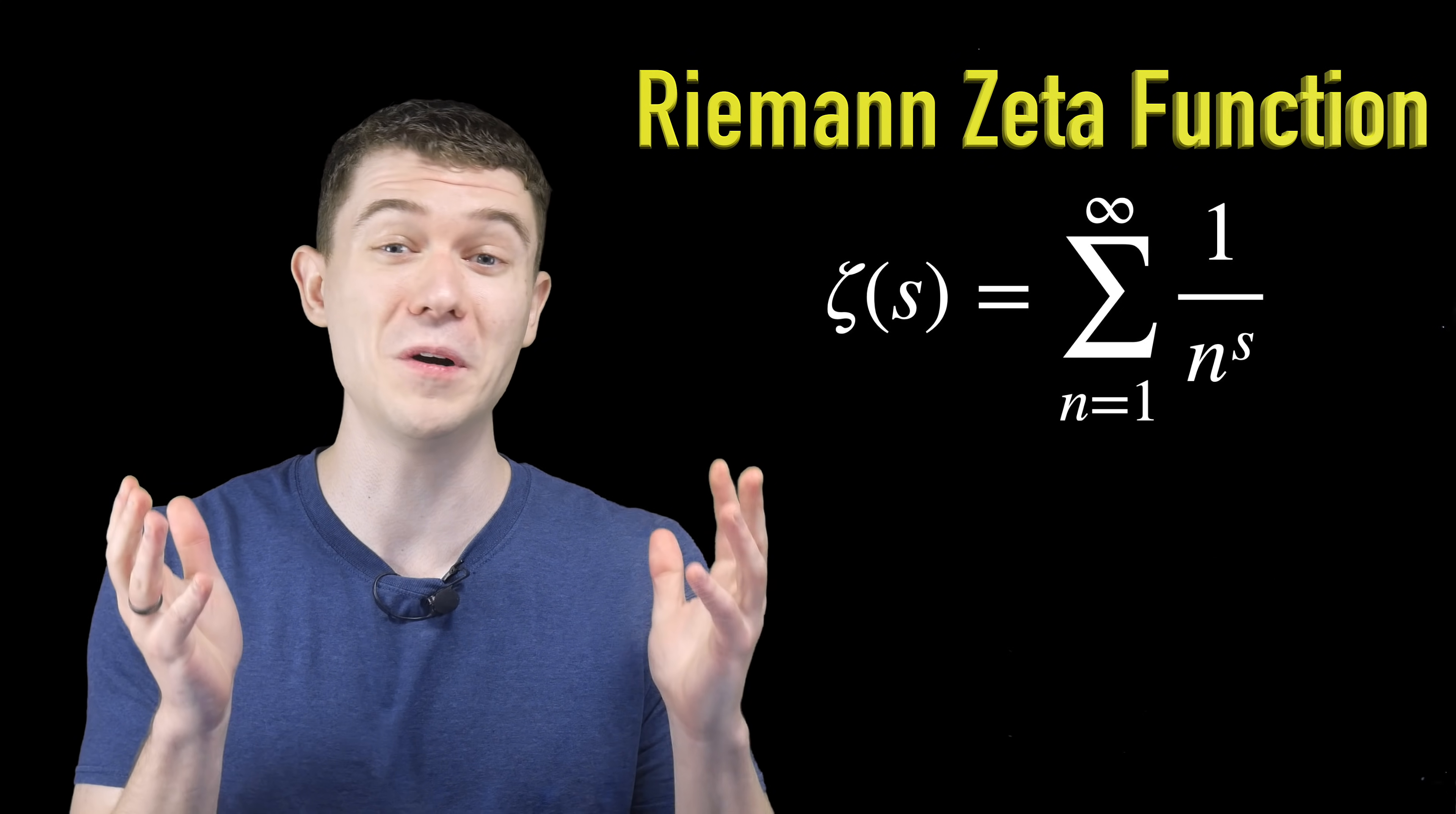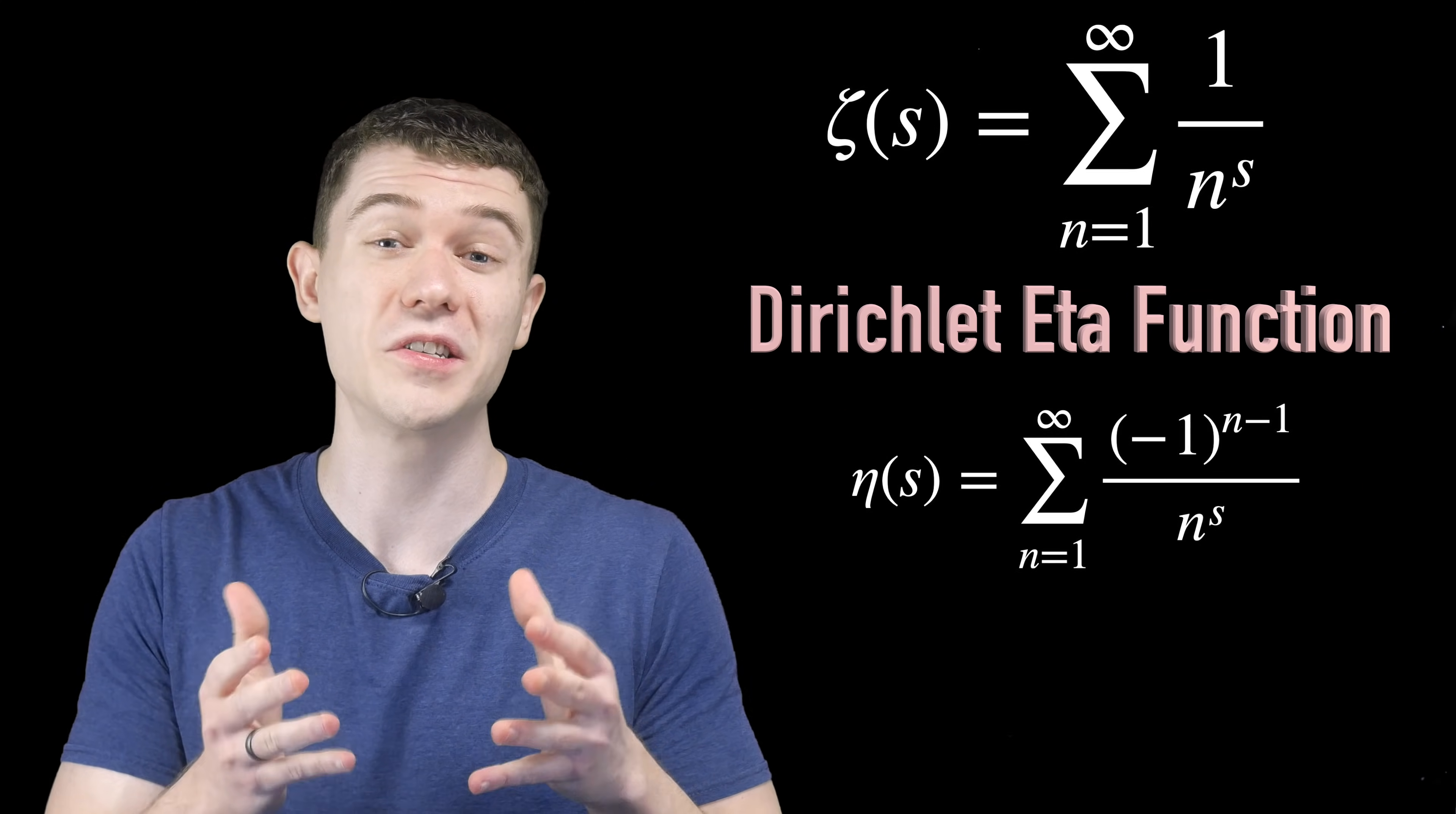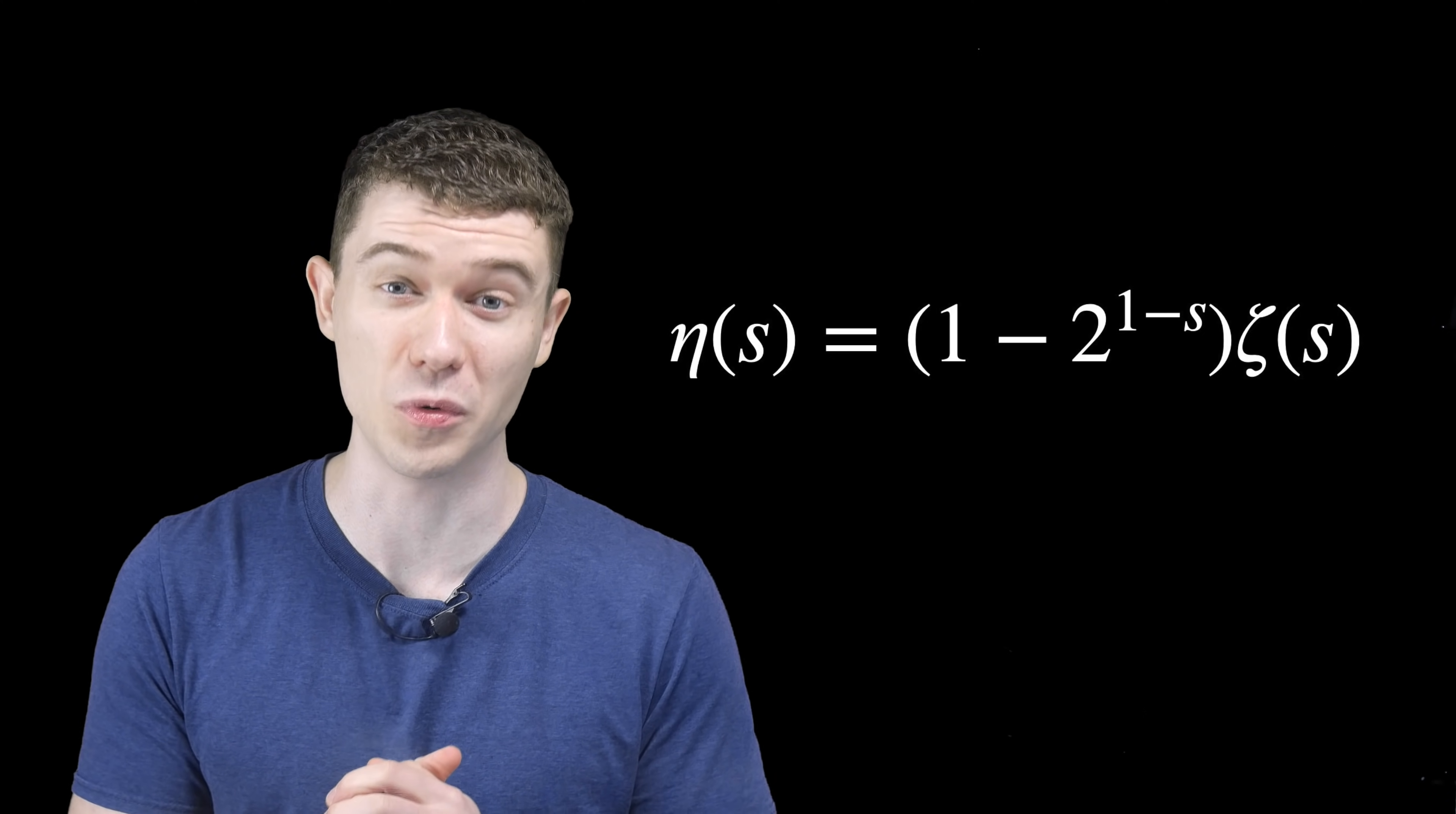The last major tool we need to solve this problem is the Riemann zeta function and its cousin, and I'm not going to be able to say this correctly, direct eta function. Since the eta and the zeta functions are so similar, they have a very nice relationship that lets us transfer between the two.